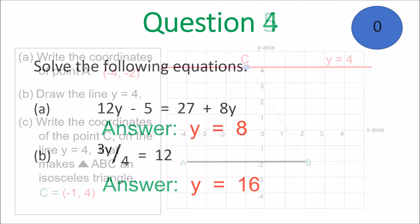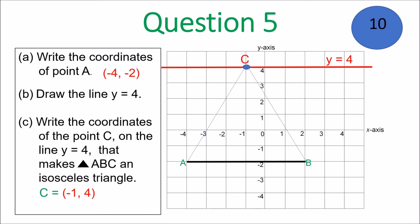Question 5: the point is negative 4, negative 2 for A. The line Y equals 4 is the red line, and C is negative 4, 4.